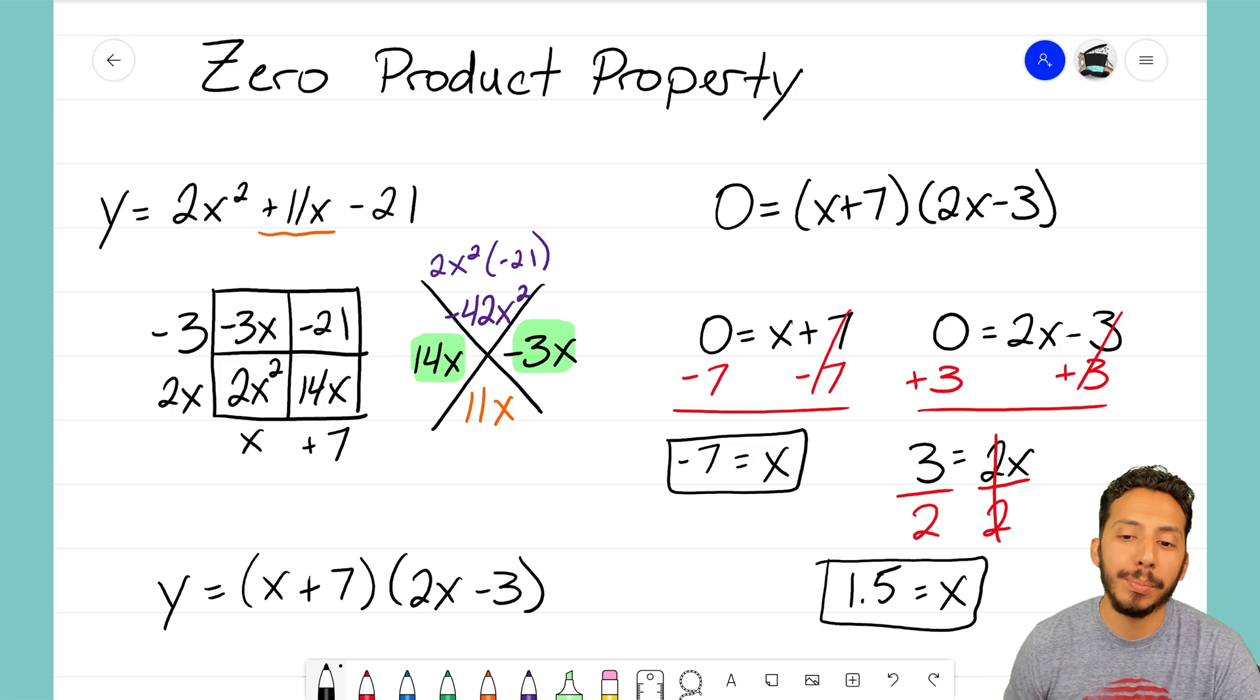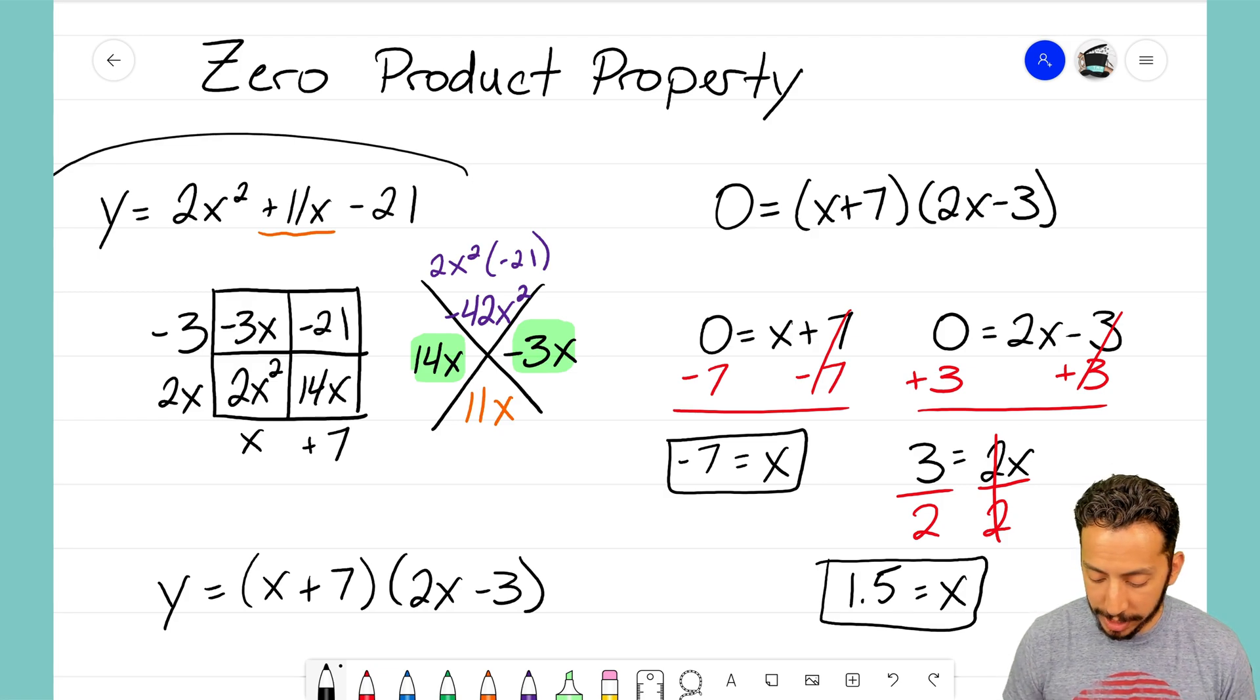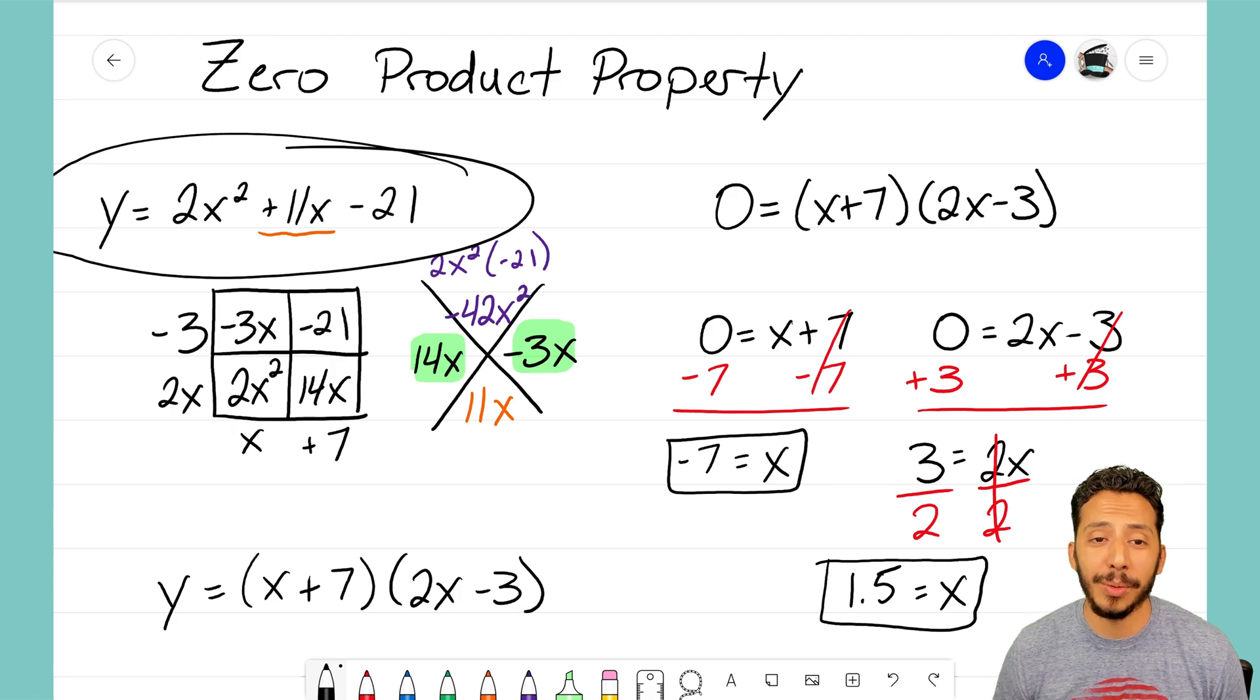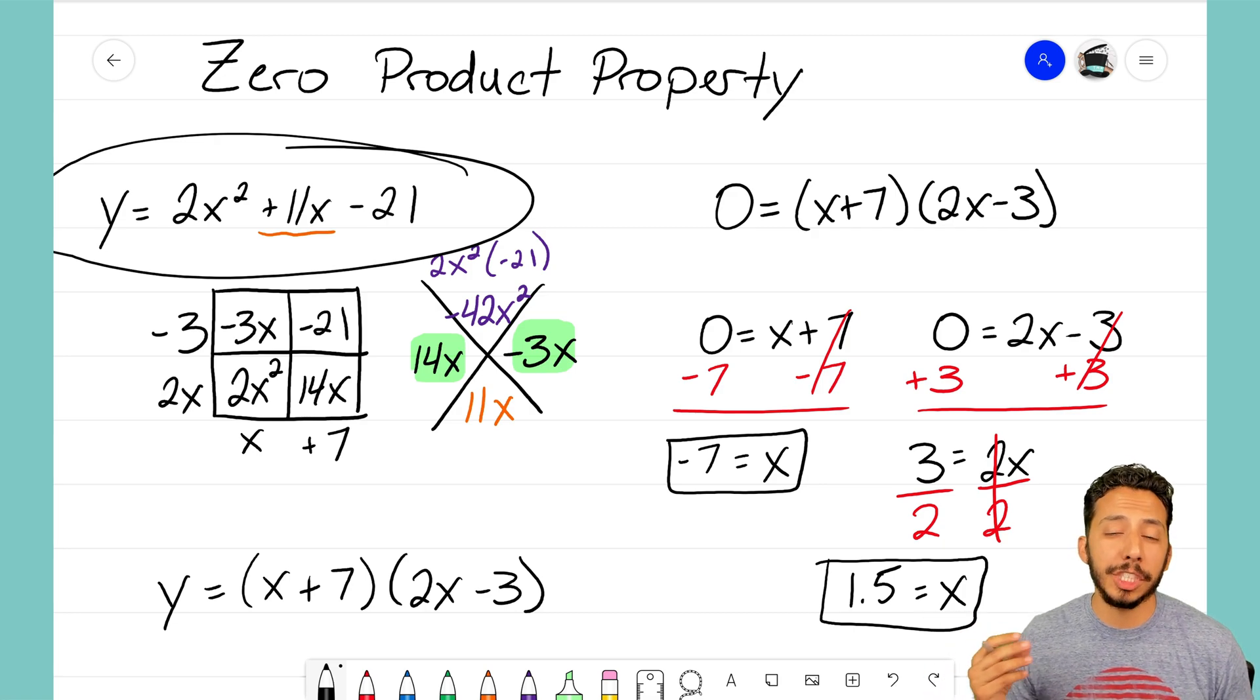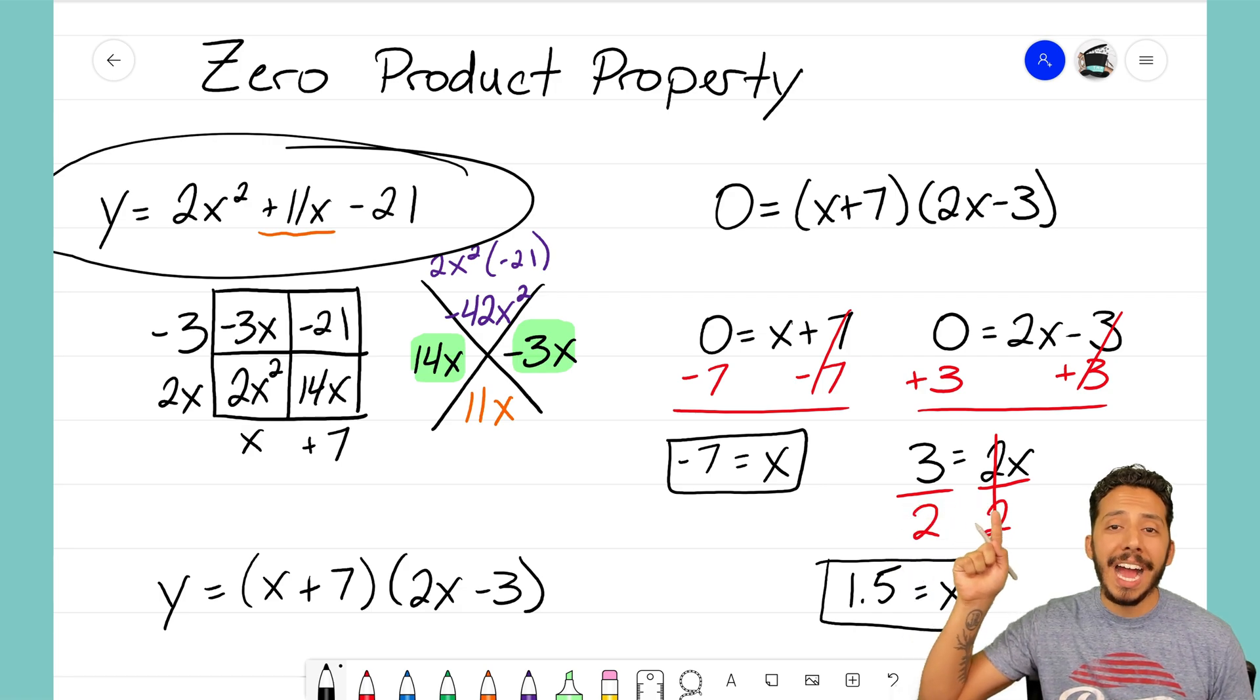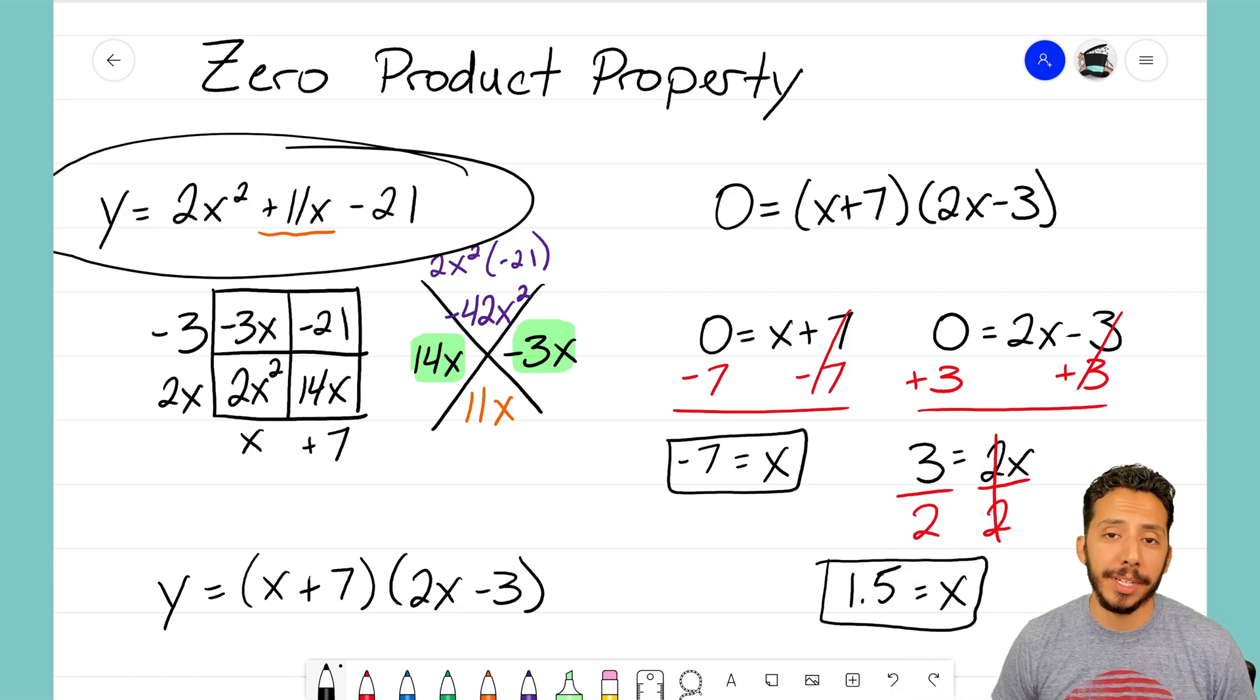So there we go. Those are the two x-intercepts for our equation y equals 2x squared plus 11x minus 21. We solved that by first factoring using the box and diamond method. We want that equation turned into factored form because once it's in factored form, I can use the zero product property to determine my two x-intercepts. It's that math magician, and I'll see you on the next video.